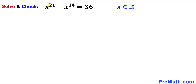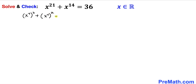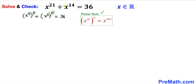Let's look at these exponents 21 and 14. We can rewrite them: 21 can be written as 7 times 3, and likewise 14 can be written as 7 times 2. Therefore we can write this equation as (x⁷)³ + (x⁷)² = 36, applying the power rule of exponents — 7 times 3 gives us 21, and 7 times 2 gives us 14.